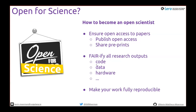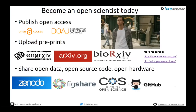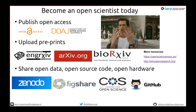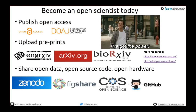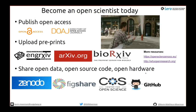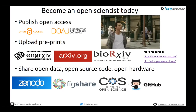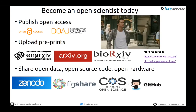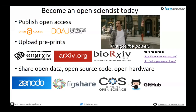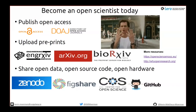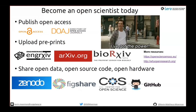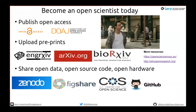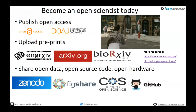So how do you become an open scientist? Make your work fully reproducible. Publish your works open access, upload preprints to ensure your papers are accessible to everyone, and share open data, open source code, and open hardware. Some great repositories: Zenodo, hosted by CERN; Figshare for datasets; the Center for Open Science, the backbone for many archives including the Engineering Archive; and GitHub. That's the end of my presentation — thanks a lot for listening.